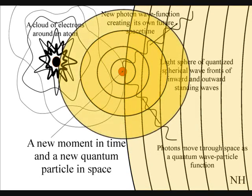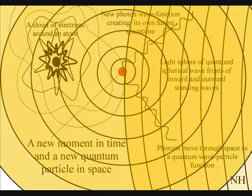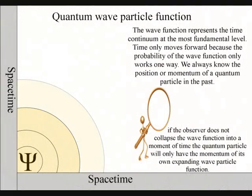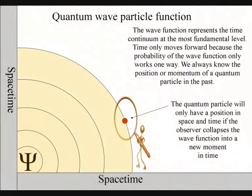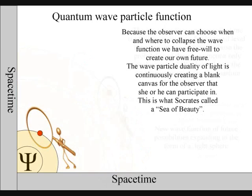This has nothing to do with consciousness. All atoms create their own space-time geometry. But it is because life in the form of an observer can choose when and where to collapse the wave function that we have free will.